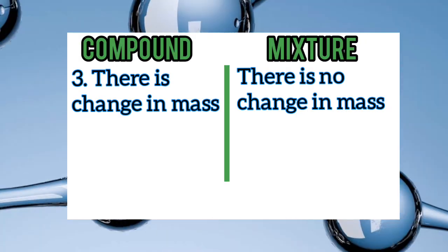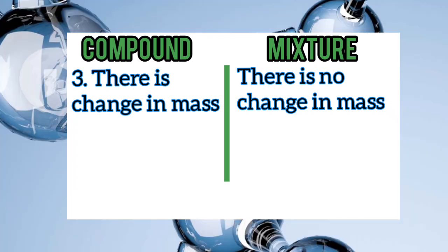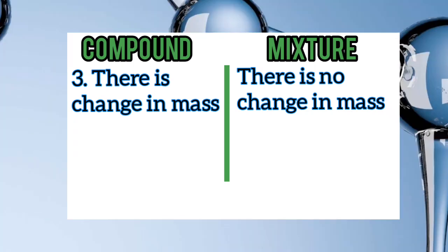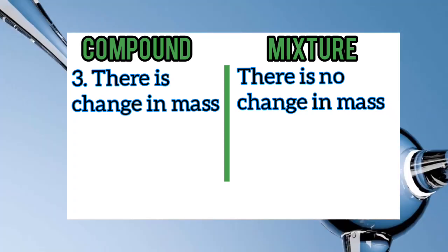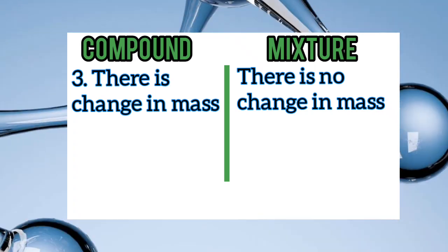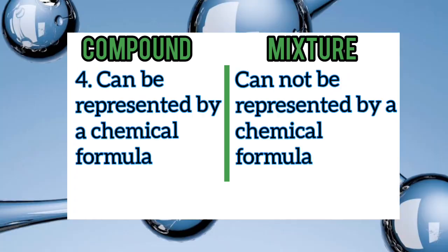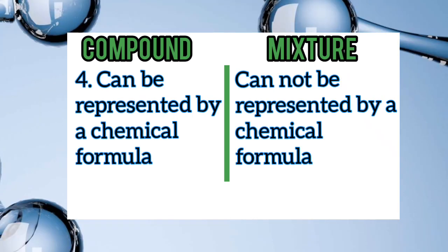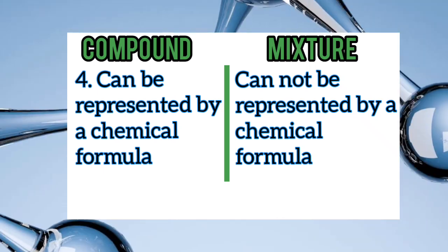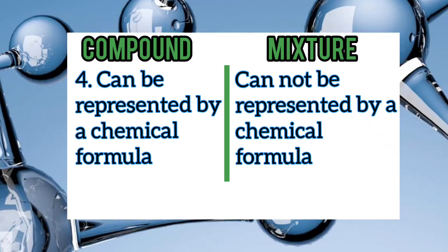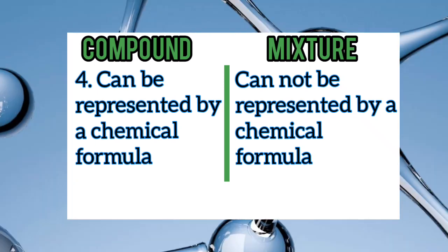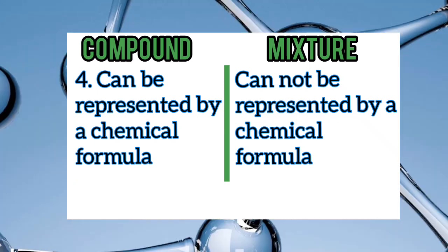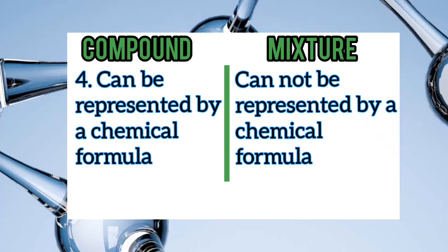The number three difference is that in a mixture there is no change in mass, but in a compound there can be a change in mass. The number four difference between a mixture and a compound is that a mixture cannot be represented by a chemical formula, while a compound can be represented by a chemical formula.